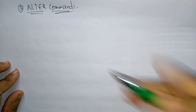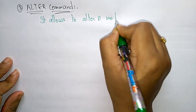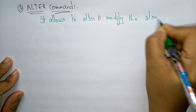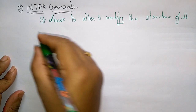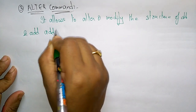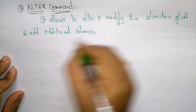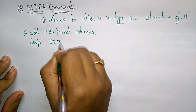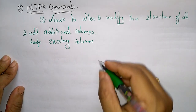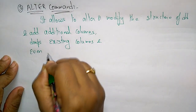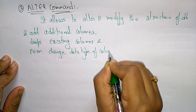So what is the use of the ALTER command? This ALTER command allows you to alter or modify the structure that is present in the database. It is used to modify or alter the structure of the database. It also adds additional columns — if you want, you can add columns. It also drops existing columns. You can also change the data type of a column.